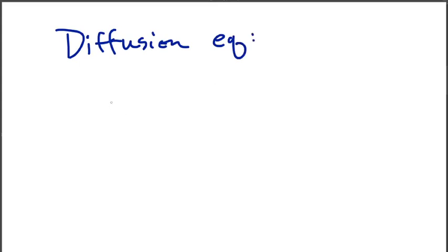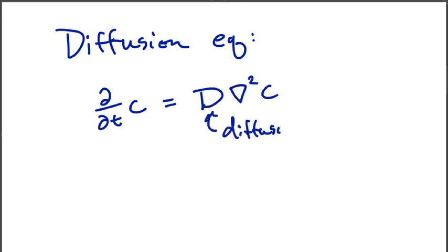The diffusion equation for some quantity, some scalar quantity C, is given by ∂C/∂t = D∇²C, a Laplacian with a diffusion coefficient, like so. So this is our diffusion coefficient. And for the diffusion equation, this is the only term that's governing the evolution.